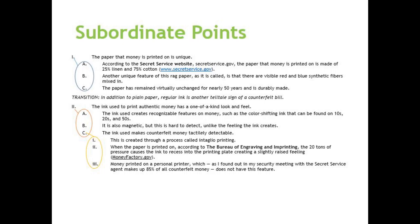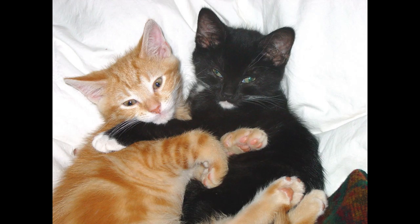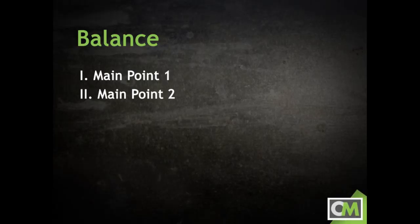Another important tip to remember when outlining is that it is important to balance the information that you present. Don't spend five minutes on your first main point and 30 seconds on your next. To help with balancing out your speech, remember this rule: all points should have at least one buddy — don't let them be lonely. To translate that into speech lingo, you can't have one without two: A without B, etc.